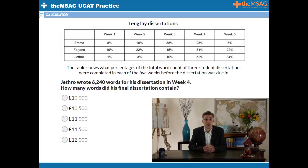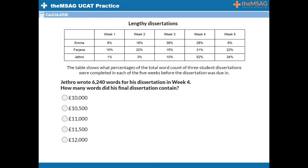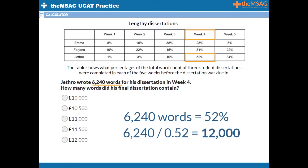Question 2: Jethro wrote 6,240 words for his dissertation in week four. How many words did his final dissertation contain? We know from the table that Jethro completed 52% of his total word count in week four. From the question we know this was 6,240 words. We therefore have an amount — 6,240 words — equaling a percentage of 52%. So if we apply our shortcut, we divide 6,240 by 0.52 to give us 12,000. Jethro's final dissertation was 12,000 words long, and option E was therefore the correct answer choice.